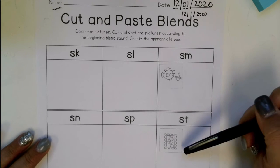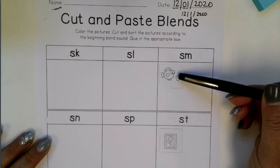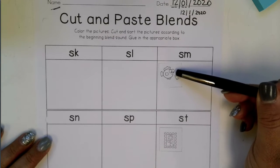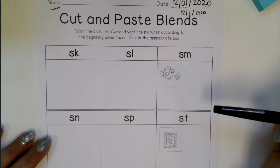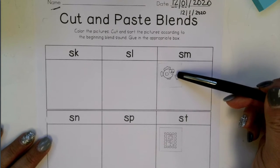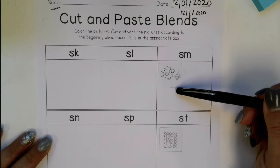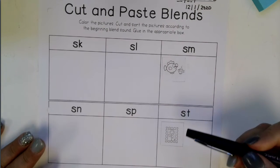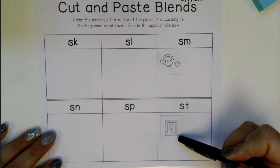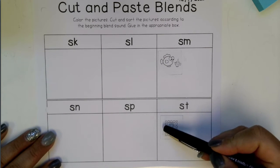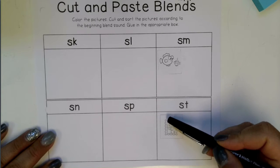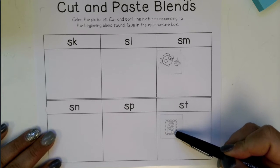You can see I've given you a couple of examples. This little fishy here — that's a small fish — small starts with SM, so that gets pasted there. The other one I'd like to go through with you is stamp. Stamp starts with ST.